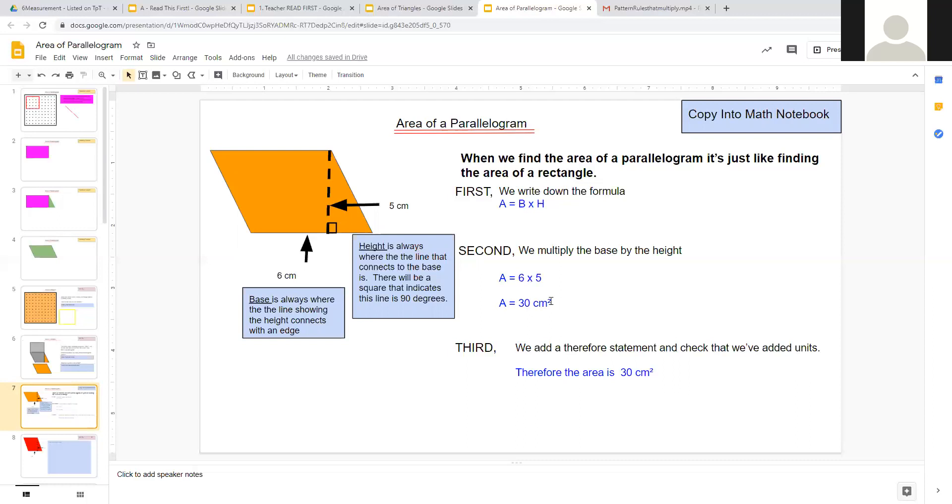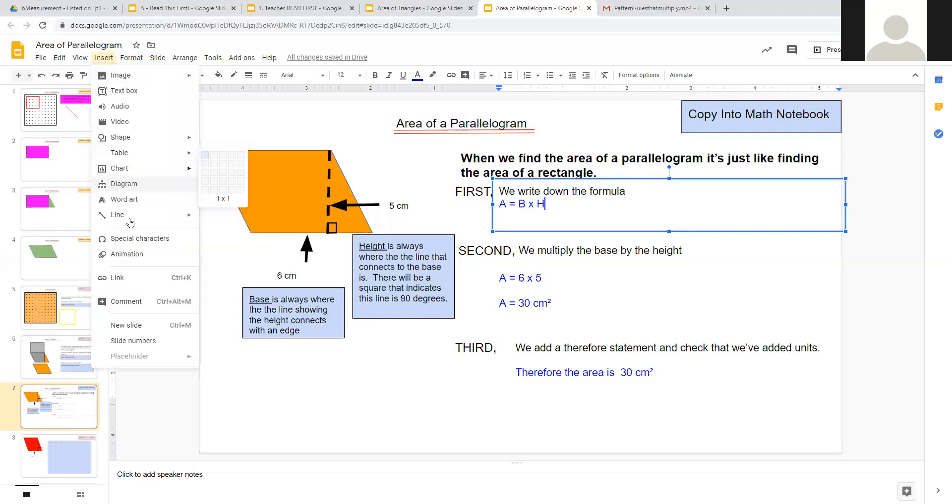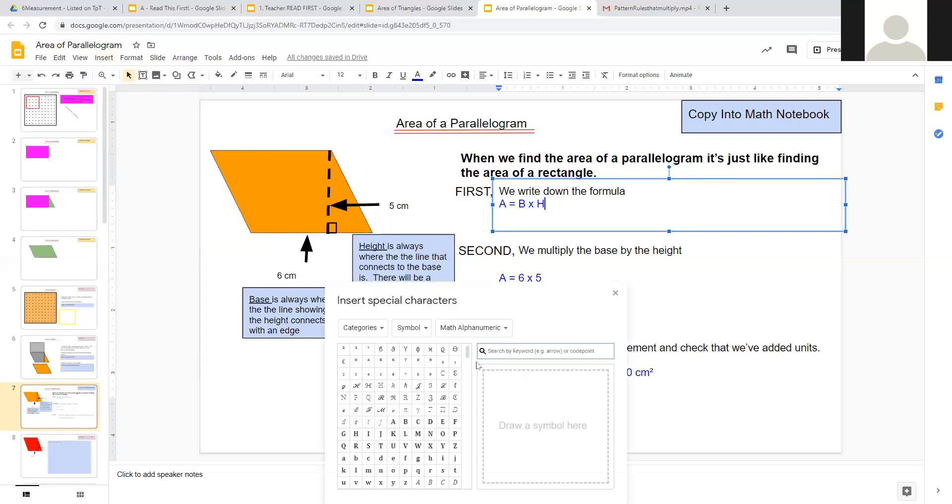If you're stuck on how to get that little two in there when you're working in Google Slides, you're going to go up to Insert and then go to Special Characters. The one you want is Symbol and Math, which is Alphanumeric—which just means numbers and letters.